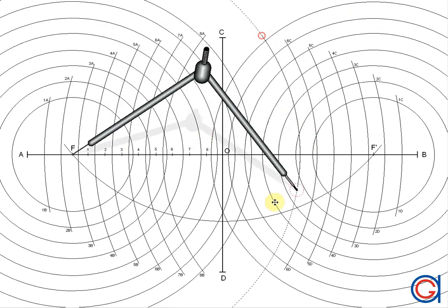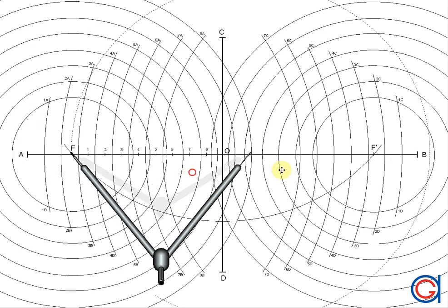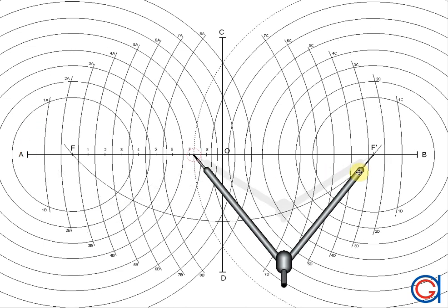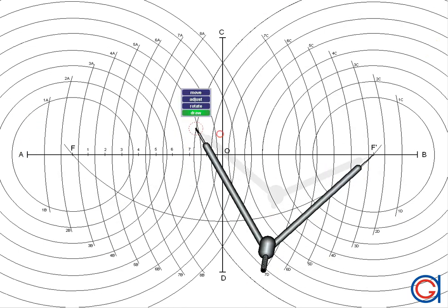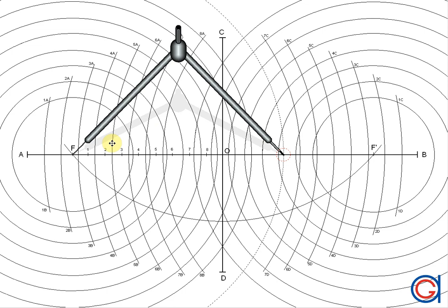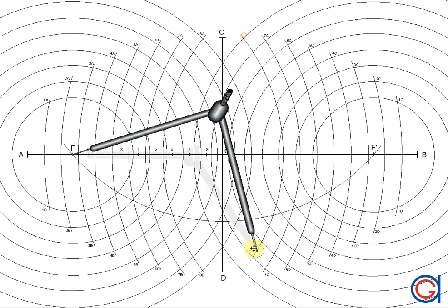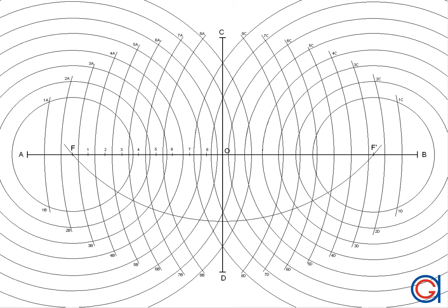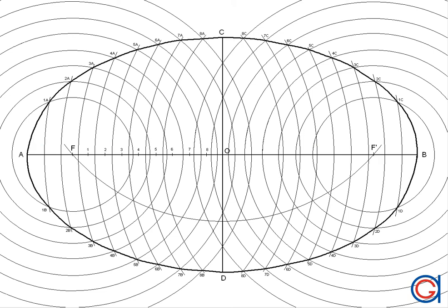There are two ways to complete our ellipse. We can join the points freehand to complete the ellipse, or we can use the help of a curves template ruler. There you can see we've joined it freehand.